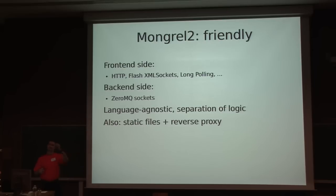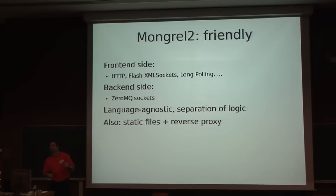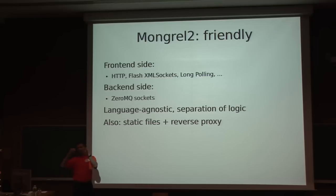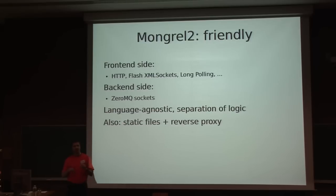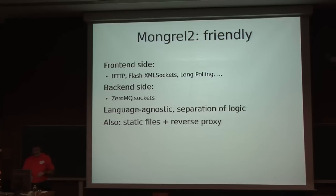You have clients coming in on the front end connecting via normal HTTP requests, or if you do things like web chat you can do long polling, or you can have Flash applications on the client side connecting to Mongrel 2 using Flash sockets. Mongrel 2 converts those requests on the back end into ZeroMQ messages, and you connect your back-end handlers via ZeroMQ to the Mongrel front end. This gives you flexibility and language agnosticism — Mongrel is very much language agnostic. It also handles static files and reverse proxy.